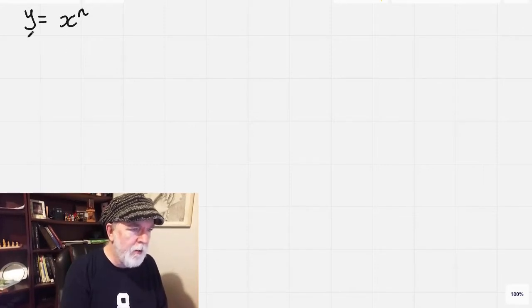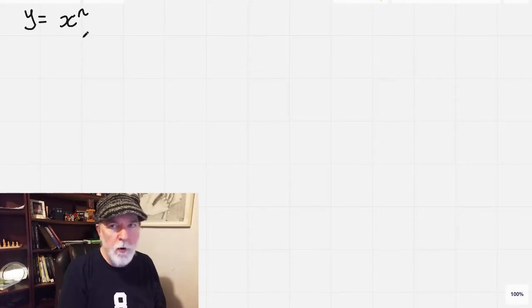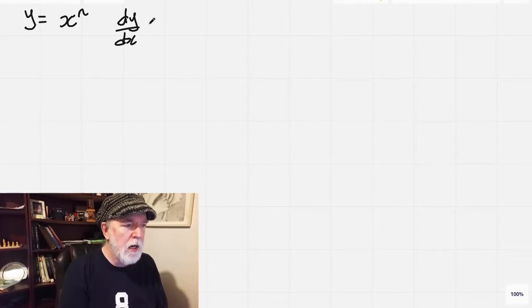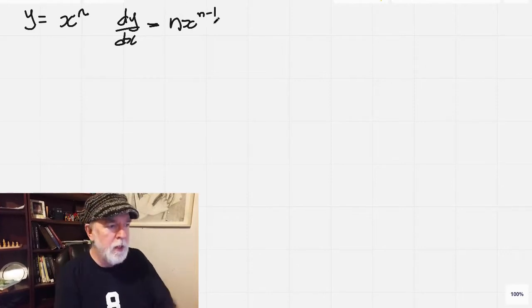And that's our method for differentiating anything of the form y equals x to some power. And the derivative of that will be dy by dx equals n. So this n just goes to the front x, and then we reduce the value of n by 1. So there's our general rule. So let's have at it.